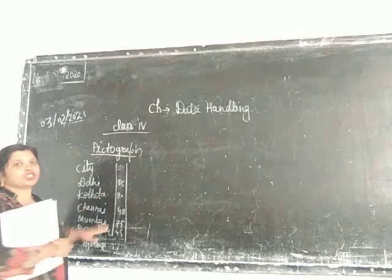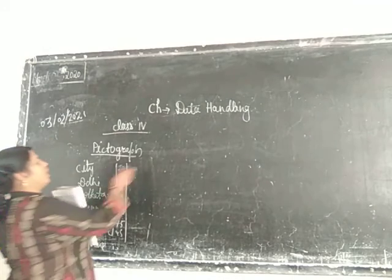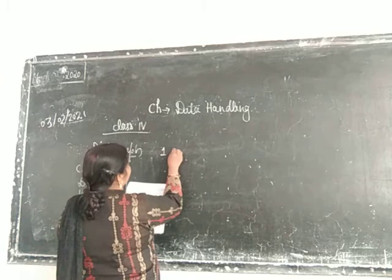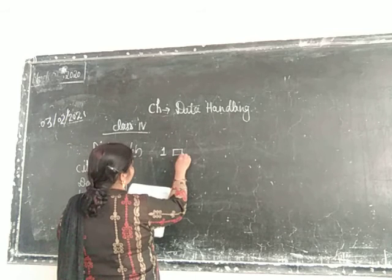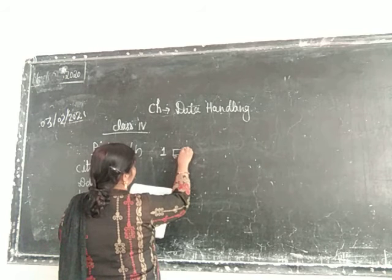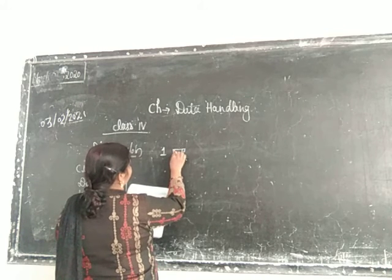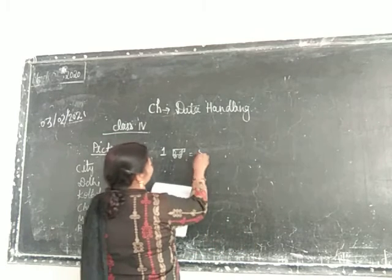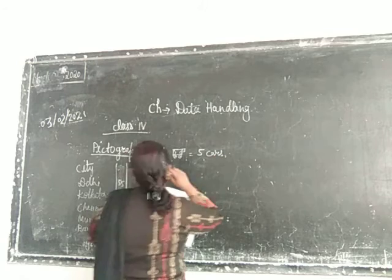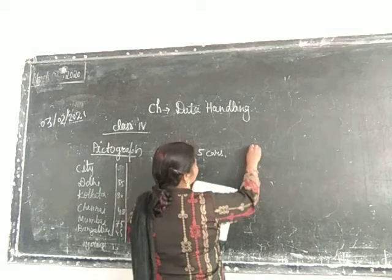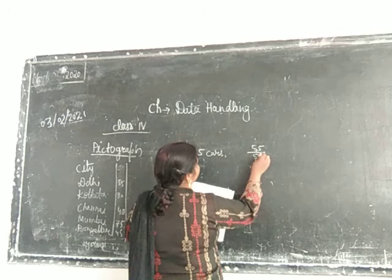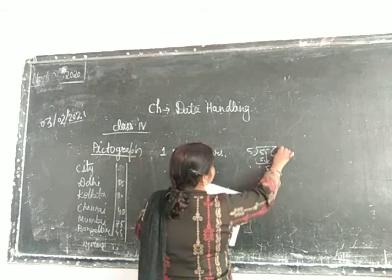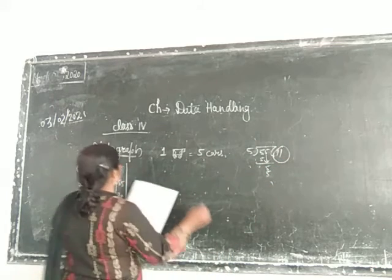Here are numbers which come in the table of 5, so we can take unit 1. Let's say 1 car image equals 5 cars. So here is 55 — 55 divided by 5 equals 11. So you will make 11 car symbols here.